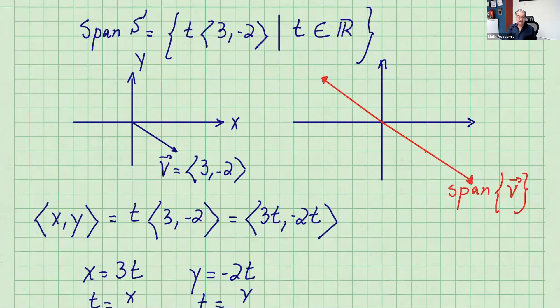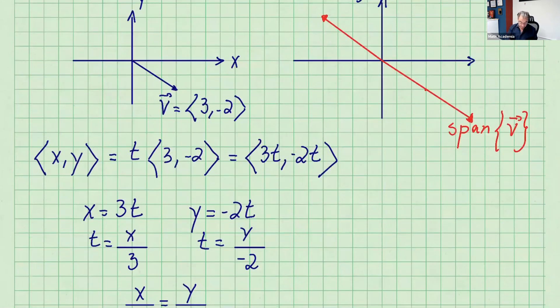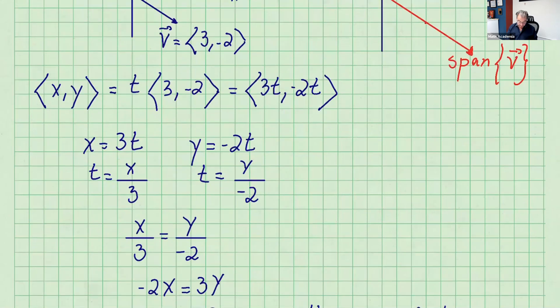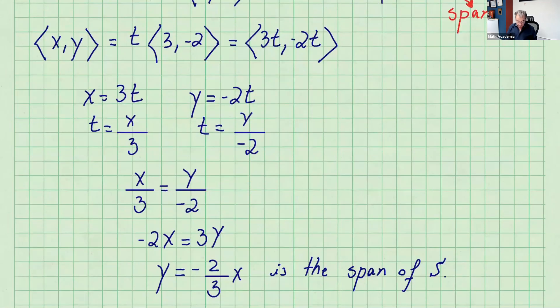If you want to find the span of a vector, you can just put x, y and t times that vector, which is 3t and -2t. So x is 3t and y is -2t. If you isolate t, t is x over 3 here and y over -2 here. So x over 3 equals y over -2, we can put these two equal to each other.